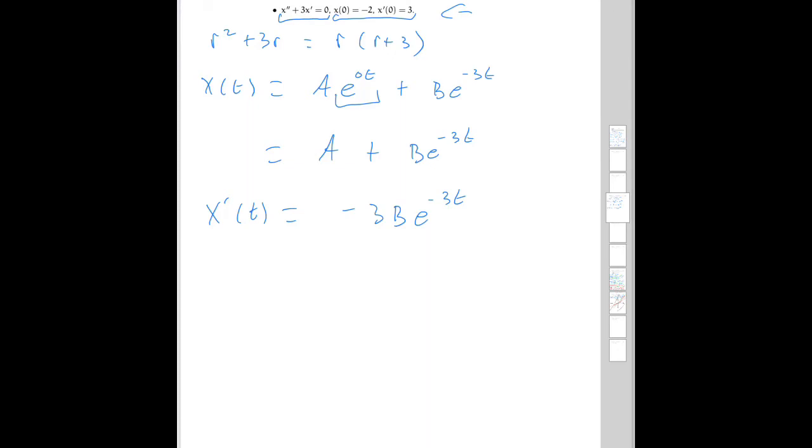Okay, so we know x of 0 is equal to minus 2. So minus 2 is equal to A plus B, and we know x prime of 0 is equal to 3. So we know that 3 is equal to minus 3B. Well, this tells us B is equal to minus 1.